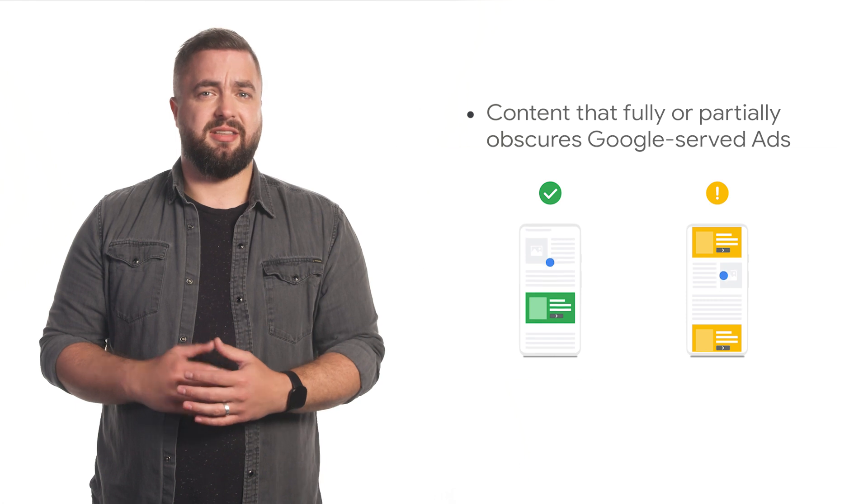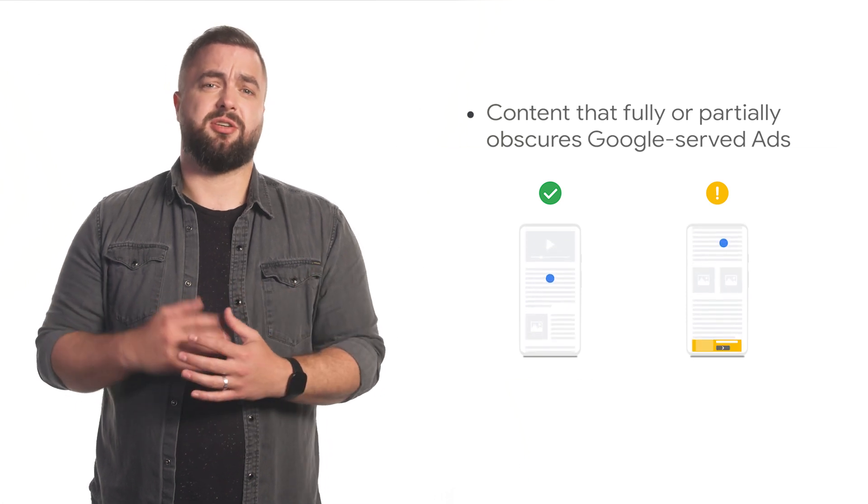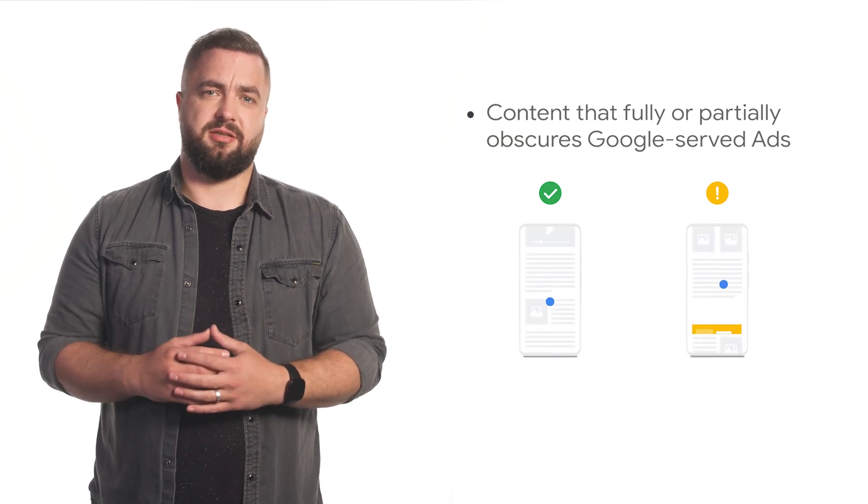Under the restriction, content obscuring Google-served ads, we will restrict advertising for content that fully or partially obscures Google-served ads. Google publisher restrictions identify content that is restricted from receiving certain sources of advertising. If your content is labeled with an inventory restriction, fewer advertising sources will be eligible to bid on it. In some cases, this will mean that no advertising sources will bid on your inventory at all, and hence, no ads will appear on your content.